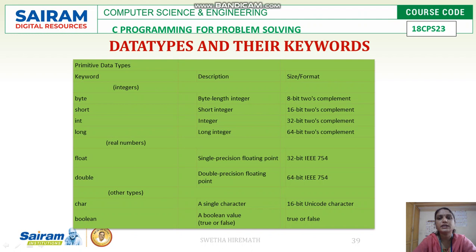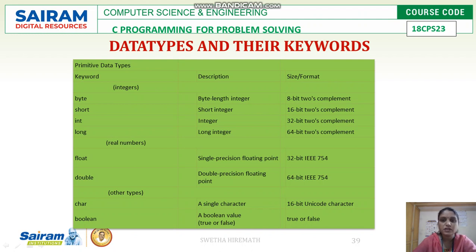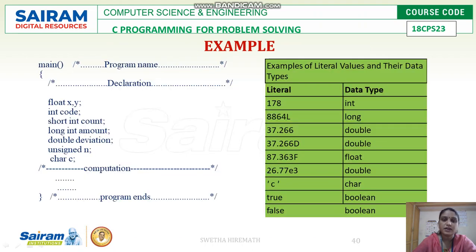Coming to data types and their keywords, we have different data types: byte, short, int, long, float, double, char, and boolean. Short represents short int; int represents the integer value; long represents the long integer. Similarly, float and double — all different keywords are used to specify what data type it is, and the variable name should be declared with that particular data type.